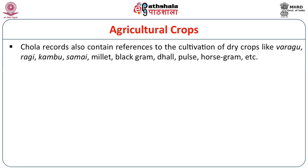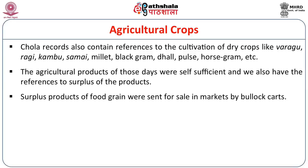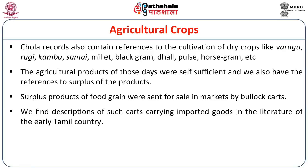Chola records also speak about cultivation of dry crops like Varahu, Ragi, Kambu, Samai, Millet, Black gram, Dhal, Pulse, and Horsegram. These agricultural products were self-sufficient, and there are also references to agricultural surplus. These surplus products were carried through commercial activities from villages to urban centers, as described in literature of early Tamil country.